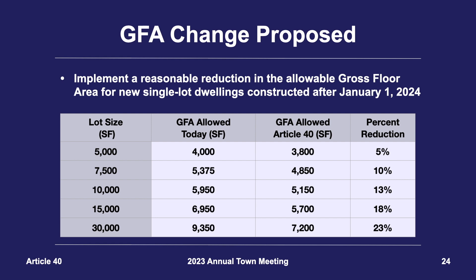Article 40, in effect, proposes one simple change: if you construct a new single-lot dwelling after January 1st, 2024, it should be smaller in GFA than what is currently allowed today. The table provides examples for different lot sizes of how much GFA is allowed today and the proposed reduction. On smaller lots, such as a 5,000-square-foot lot, this represents about a 5% reduction in allowable GFA, and on a 30,000-square-foot lot, this represents around a 23% reduction, with the amount of reduction designed proportionally to the increasing size of the lot.